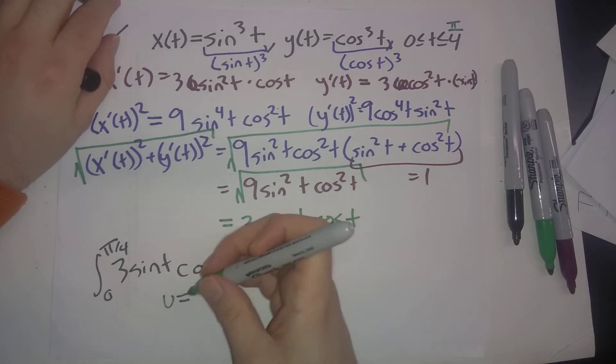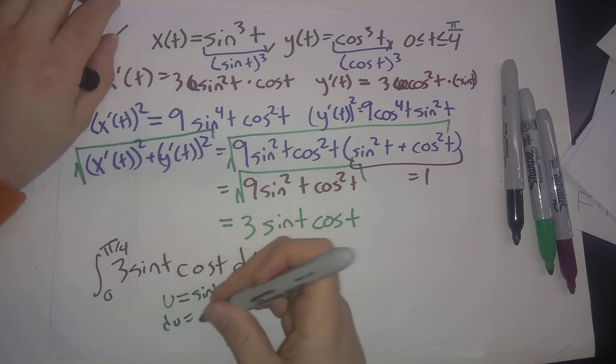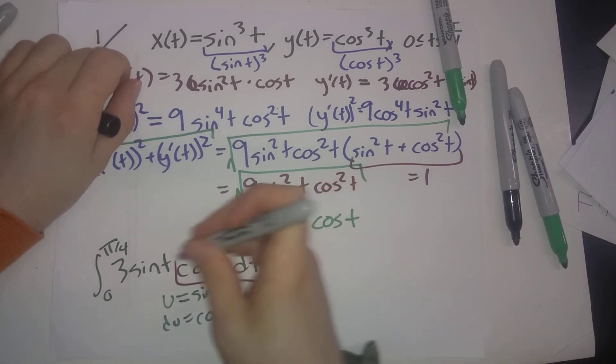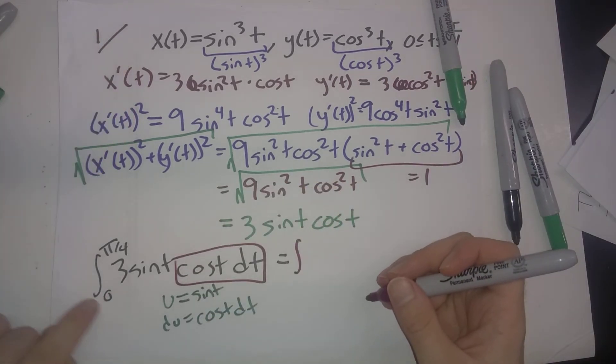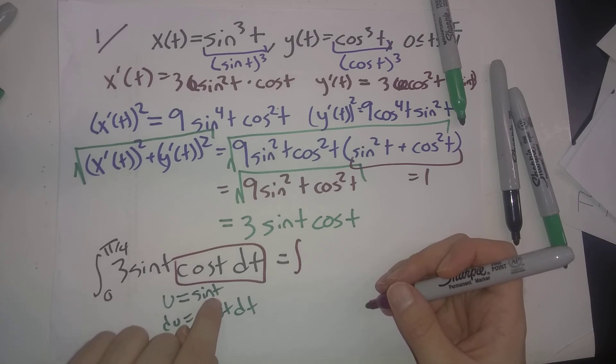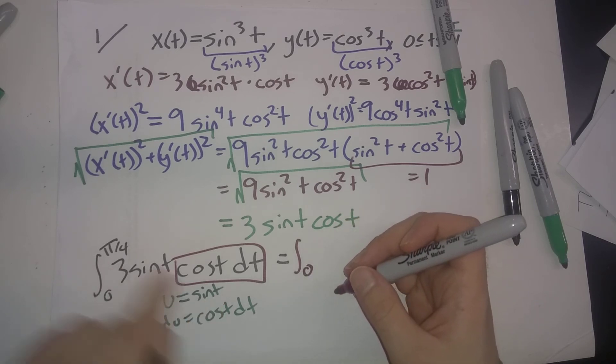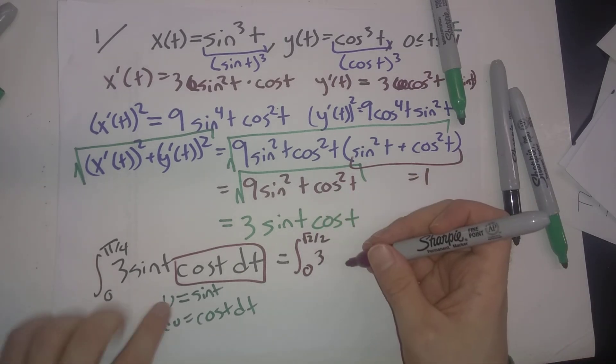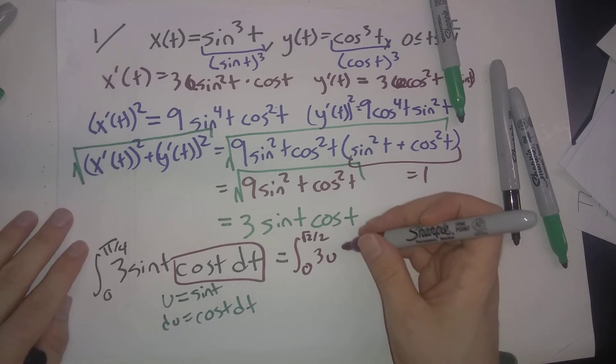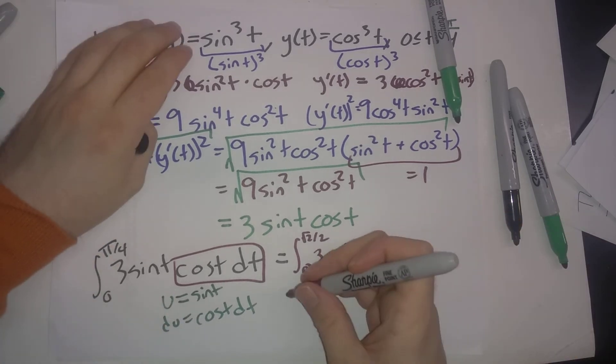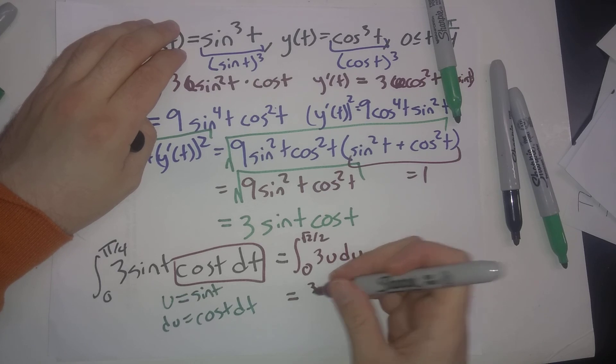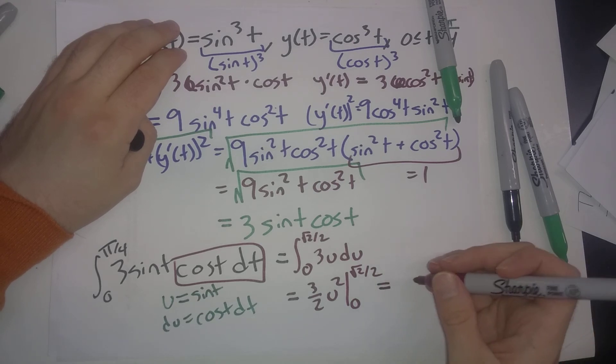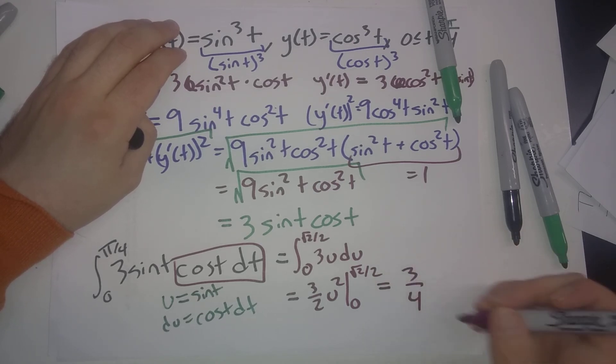Let u = sin t, so du = cos t dt. Our bounds change: when t = 0, u = 0; when t = π/4, u = √2/2. So we have ∫3u du = (3/2)u², evaluated from 0 to √2/2. Our final answer ends up as 3/4.